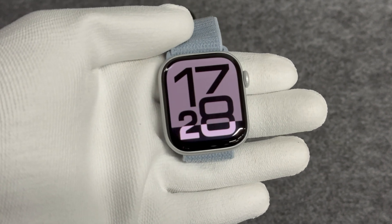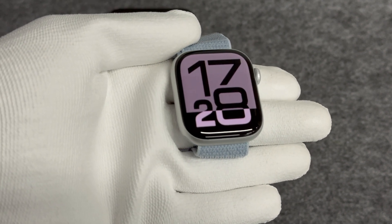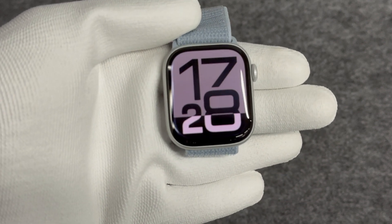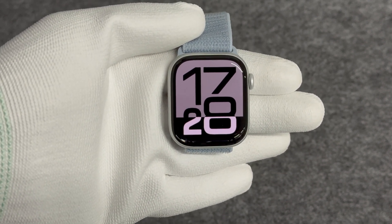The 42mm Series 10 has a resolution of 374x446, and the screen is 1mm larger than the S9, but the maximum brightness is still 2000 nits.